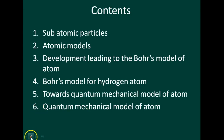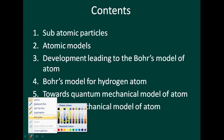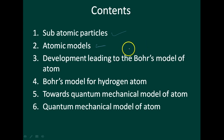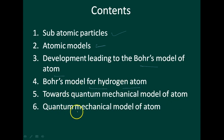In this chapter on the structure of atoms, you are going to study: first, subatomic particles — that is, protons, electrons, and neutrons; then atomic models including Thomson's atomic model, Rutherford's atomic model; then the development leading to Bohr's model of atom for hydrogen; and finally, the quantum mechanical model of atom. I will cover all these concepts in this chapter.